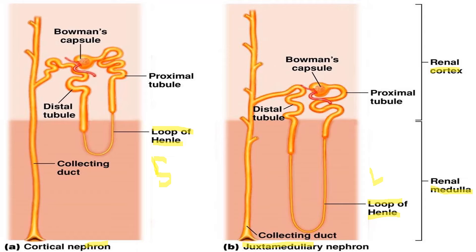If we talk about the function of both these nephrons, first you have to learn what is the function of the loop of Henle, because they differ in the size of the loop of Henle. There is a main connection between the loop of Henle and the function of both of these nephrons. The loop of Henle has the main function of reabsorption of water.